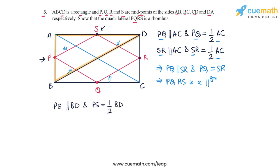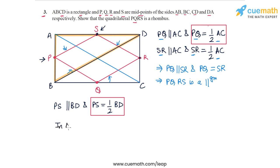Now we focus on the fact that PQ is equal to half AC and PS is equal to half BD. But in a rectangle we know that the diagonals are equal — the diagonals in a rectangle are always equal. So in ABCD, because this is a rectangle, AC is equal to BD, and this means that PQ and PS must also be equal because they are half of AC and BD respectively.